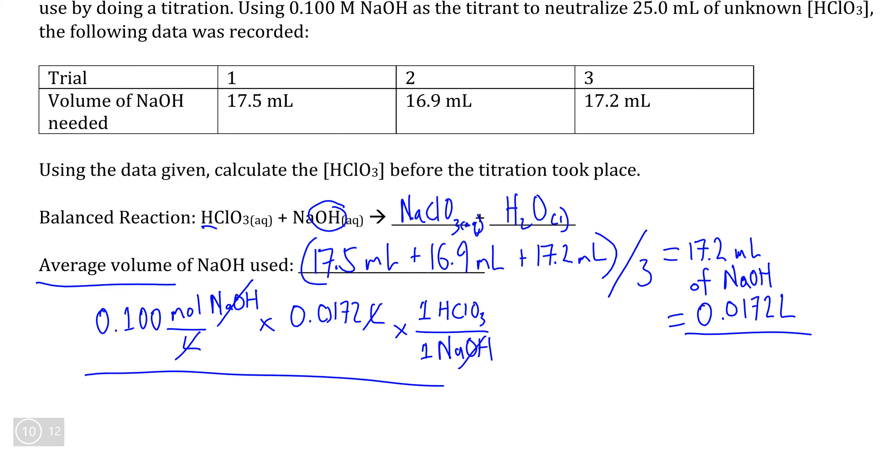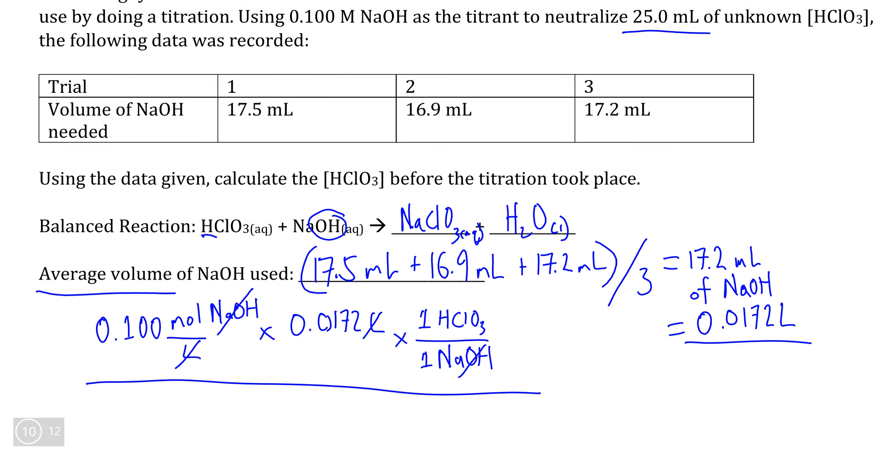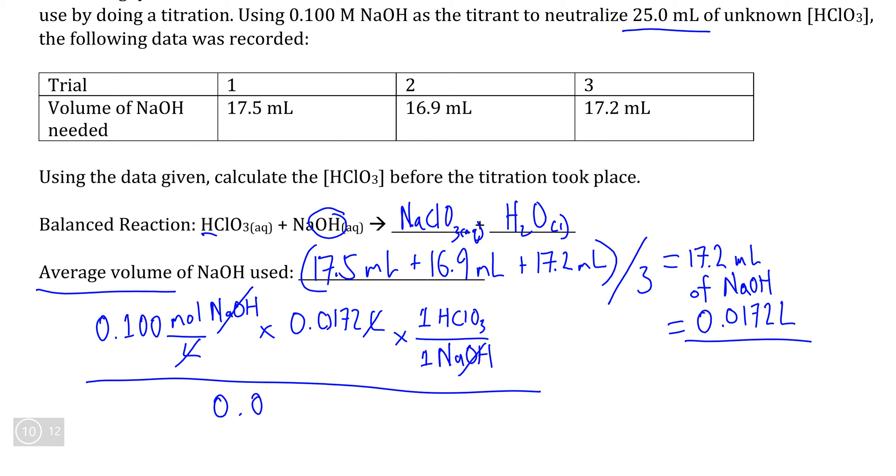The final step to calculate what the initial concentration of acid that was used is to go back and see how many liters our original sample was, which turns out to be 25 milliliters. So we can rewrite that as 0.0250 liters. If you put all this into your calculator, you should be calculating the moles of our unknown acid divided by the volume of the acid solution before the reaction. This number comes out to 0.0688 moles of chloric acid per liter.